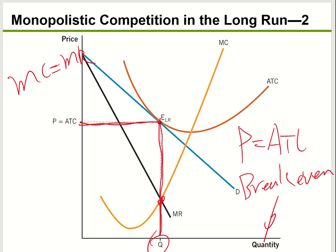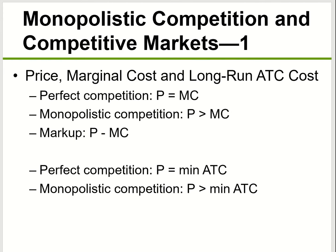This is the long-run equilibrium, because if you make a profit, other companies join and compete; if you lose money, some companies leave the market. Eventually everybody ends up making zero economic profit in the long run. This is key — remember that in the long run, everybody in perfect competition and everybody in monopolistic competition are all making zero profit.